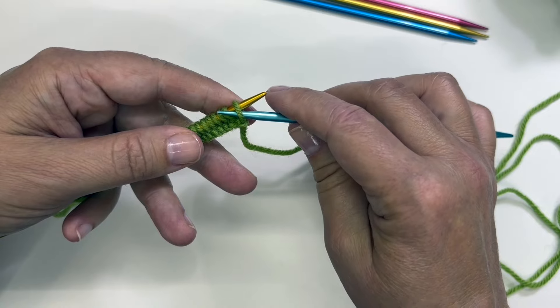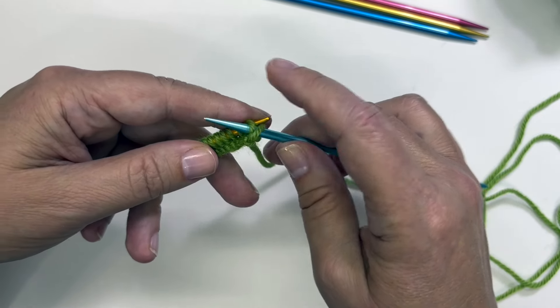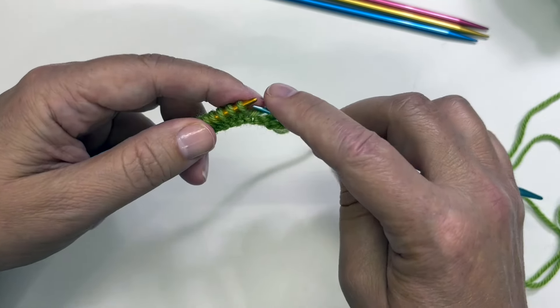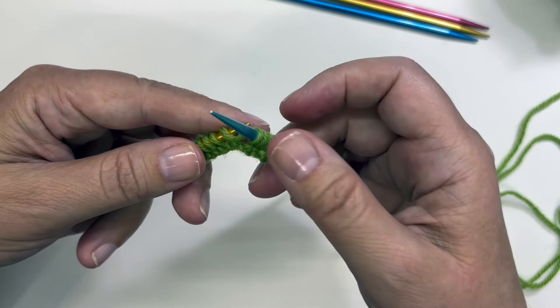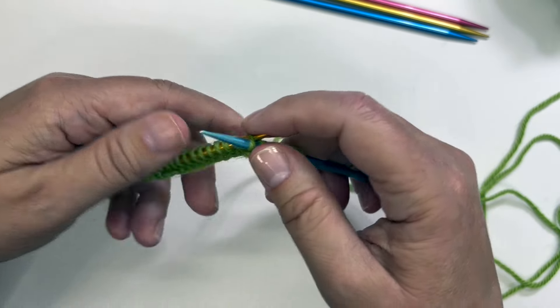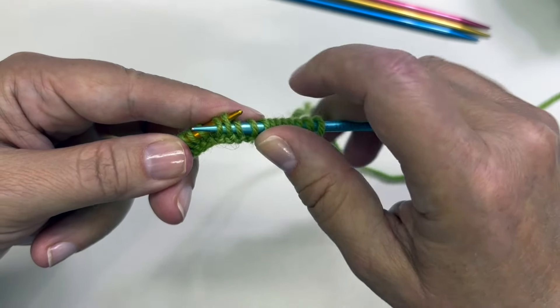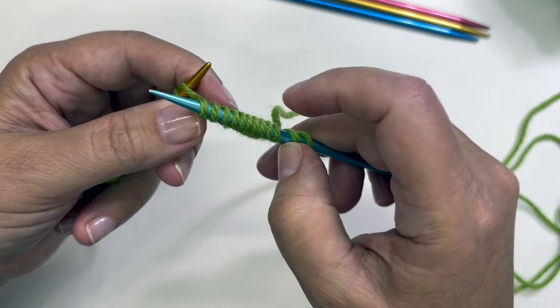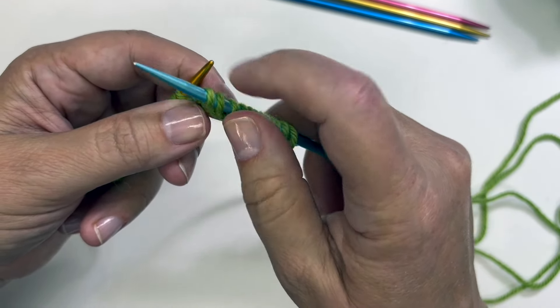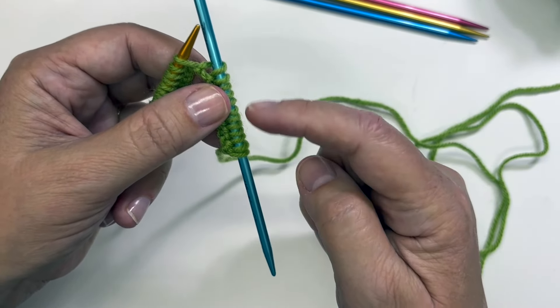I'm just going to transfer 12 stitches over here. I'm just inserting my needle and kind of scooping them over. When you get brave you can do more than one at a time. I could insert my needle tip under two stitches and pull them over. Two, four, six, eight, ten, twelve. There's twelve.